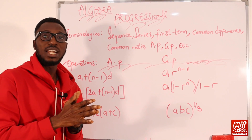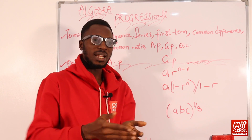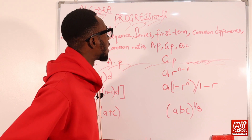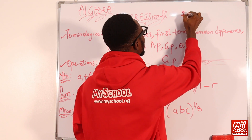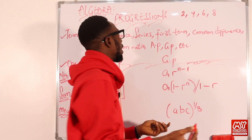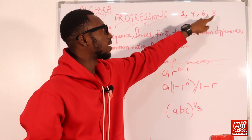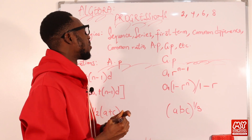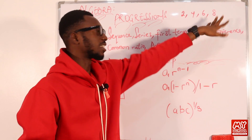A sequence is a list of numbers, or terms, that follow a certain rule. For instance, if I have the sequence 2, 4, 6, 8 — we can see the certain rule here is that the difference between each consecutive pair of terms is actually the same thing. So we can see that's a sequence. There is a certain rule guiding this expression.